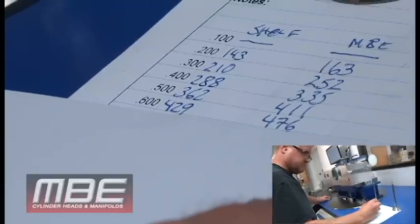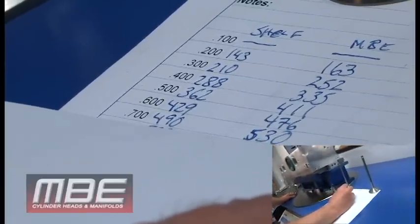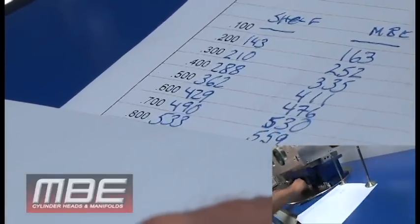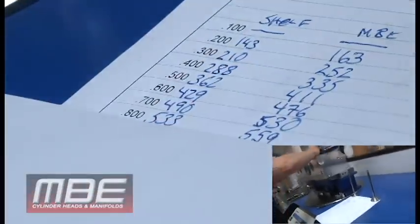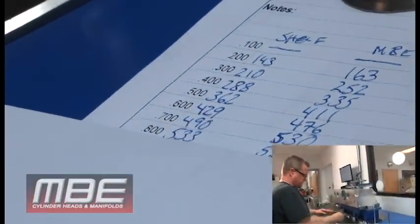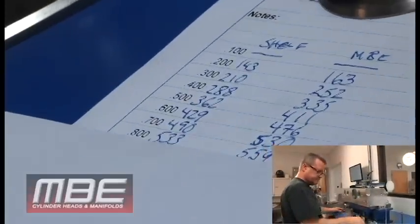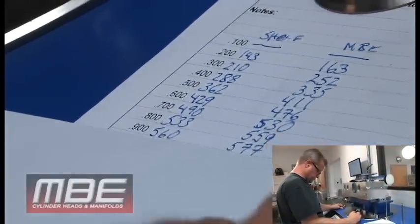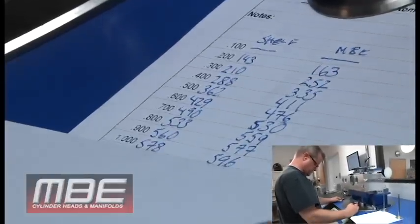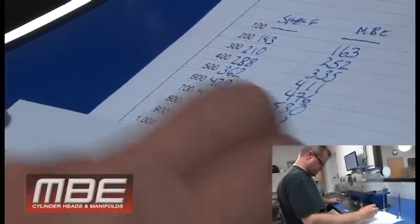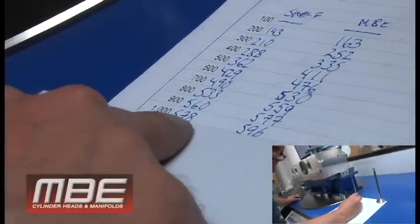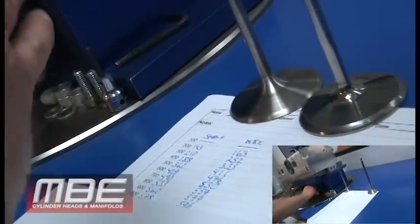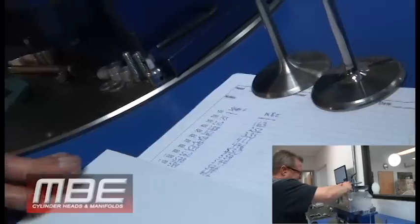I mean look at this, this is crazy - 45, 40 CFM difference. As we get up, you'll see it start to catch up a little bit because the valve gets out of the way a little bit. But still, surprisingly, even when you get to the higher lifts it still makes a significant difference. We're almost 20 CFM difference here at one inch, so the angles are still important even though the valve's open up an inch and you would think it would be out of the way.